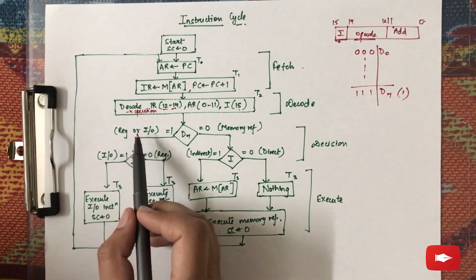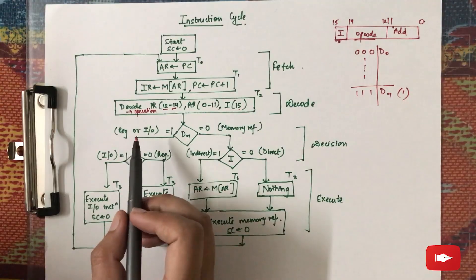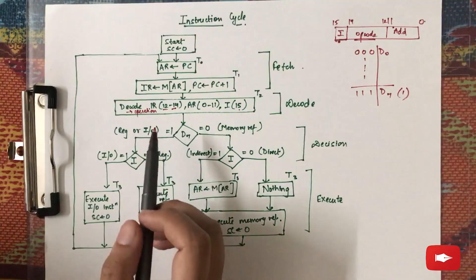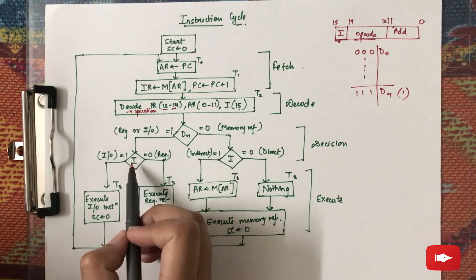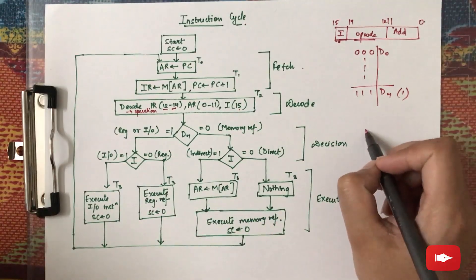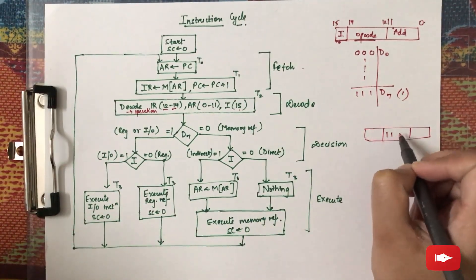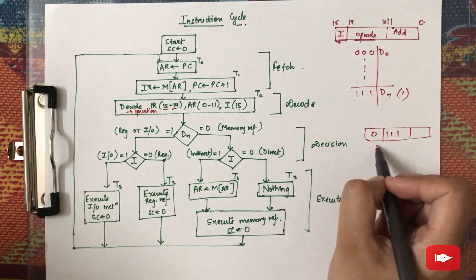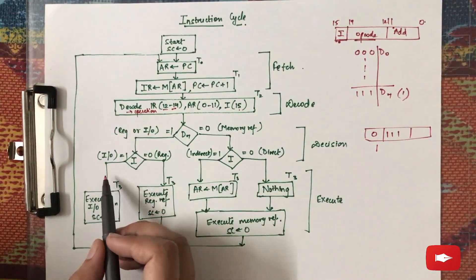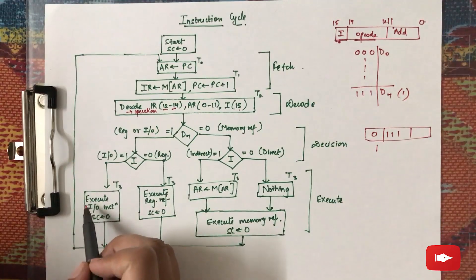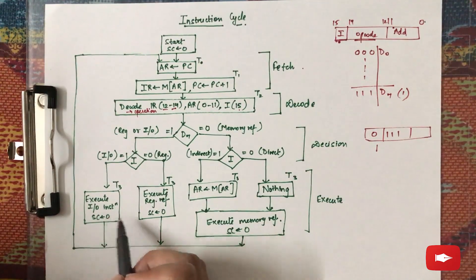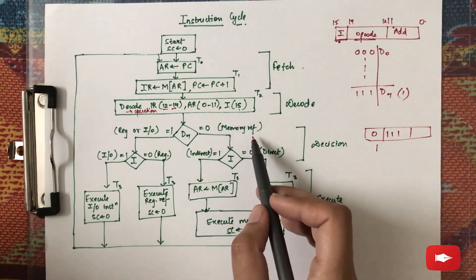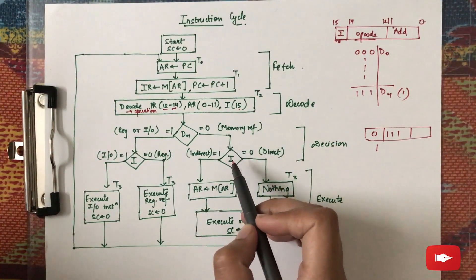If D7 is 1, the 15th bit (I) will decide whether it is register reference or input-output reference. If the 15th bit is 0, it is register reference; if it is 1, it is input-output reference. Whatever the type of instruction, it is executed, and then the sequence counter is again set to 0 because the instruction is finished.